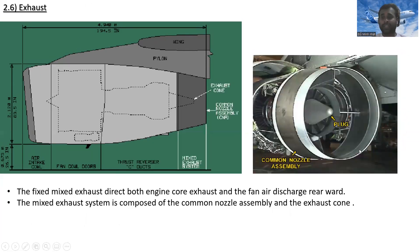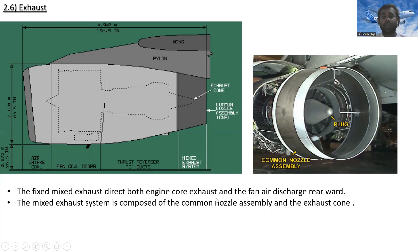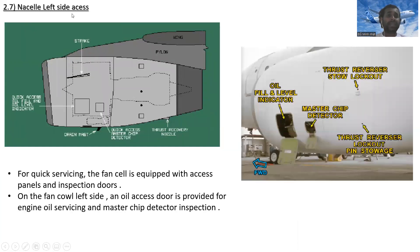The exhaust area consists of the common nozzle assembly (CNA) and the exhaust cone, forming the mixed exhaust system. The fixed mixed exhaust directs both the engine core exhaust and the fan air discharge rearward. The mixed exhaust system is composed of the common nozzle assembly and the exhaust core.